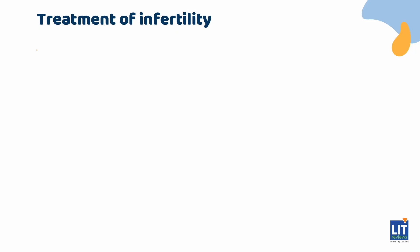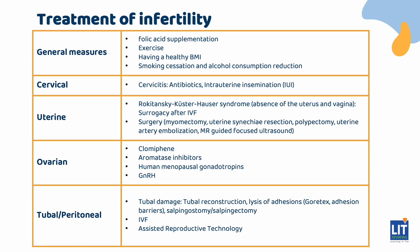Treating infertility is pretty logical: if you have identified the limiting factor, you just need to bypass it. General measures include folic acid supplementation, exercise, healthy BMI, smoking cessation, and alcohol reduction. For cervical stenosis, treat the underlying cause — for example, antibiotics for infection — or use intrauterine insemination. More detail will be covered in later slides.